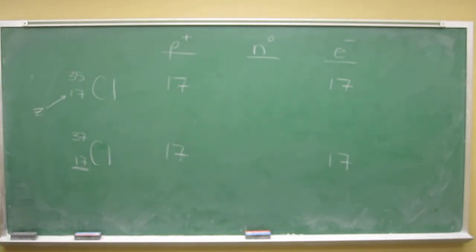Okay, now we just need to know about the neutrons. How do we figure out the neutrons? It's just the mass number, which is up here, minus the atomic number, which is down there.